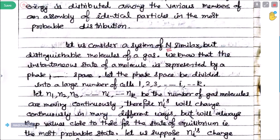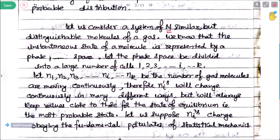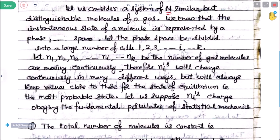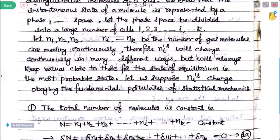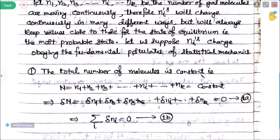The ni values will always keep values close to those of the state of equilibrium. This equilibrium state is called the most probable state. From the fundamental postulates of statistical mechanics: Postulate 1 — the total number of molecules is constant. So the sum of all ni equals capital N, which is constant. Taking the delta variation, since it is constant, the summation of delta ni is equal to zero. This is equation number 1a.